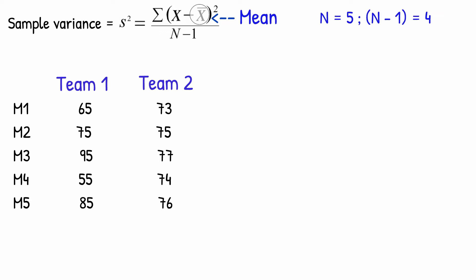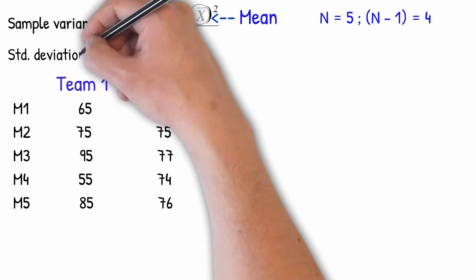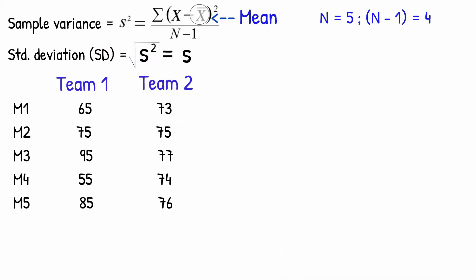Next we will define the standard deviation, that is the square root of the variance or simply s. There is one more concept that uses range in its calculation. This is the IQR or the interquartile range.